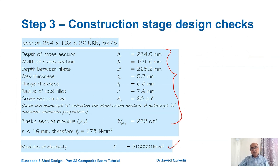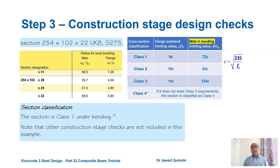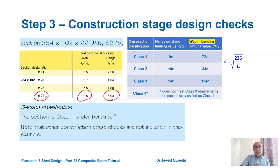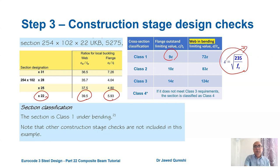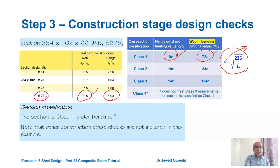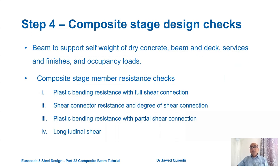Section properties of the 254×102×22 UB are taken from section tables; E = 210 kN/mm². Section classification: c/tw (web) = 39.5 and cf/tf (flange) = 5.93. With ε = √(235/275) = 0.92, the class 1 limit for flange is 9ε ≈ 8.3 and for web is 72ε ≈ 66. Both ratios satisfy class 1 limits, so the section is class 1 in bending.